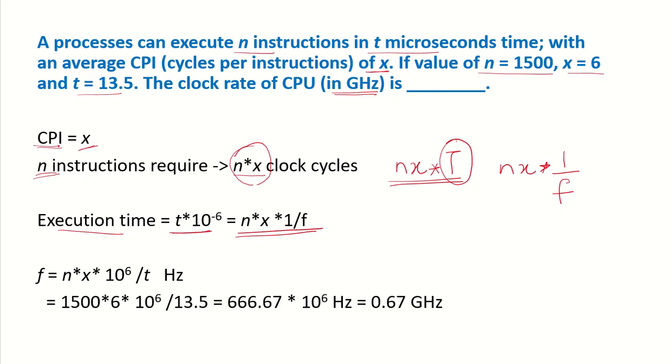T into 10 to the power of minus 6 to convert it into seconds. So what will be the value of F? If we take this equation, then F can be computed as N into X into 10 to the power of 6 upon T, and this value will come out in Hertz. N is given as 1500, X is 6, and T is 13.5. So if we compute this, we get this value in Hertz, and we know that Gigahertz is 10 to the power of 9 of this. So 10 to the power of minus 9 would be Gigahertz. So if we do this into 10 to the power of minus 9, we will get 0.67 as our answer.